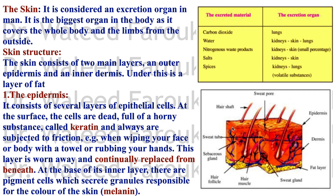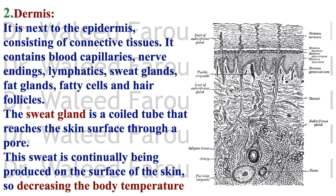The epidermis has multiple layers of epithelial cells covered by keratin on top, and is continuously replaced as the top layer is shed. Below the epidermis is the dermis, which starts from the dermal papilla. The dermis is connective tissue containing blood capillaries, nerve endings, lymphatics, sweat glands, sebaceous glands, fatty cells, and hair follicles. Below the dermis is the hypodermis — a layer of connective tissue.